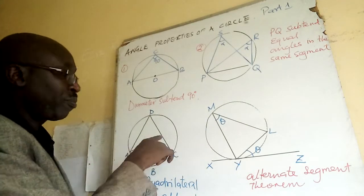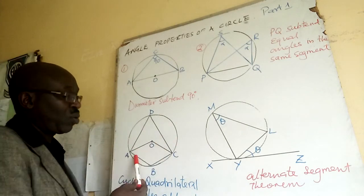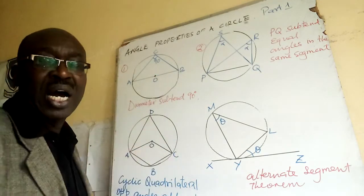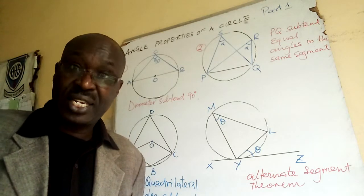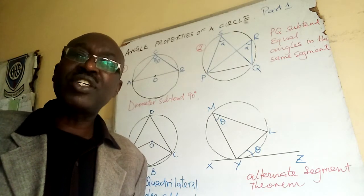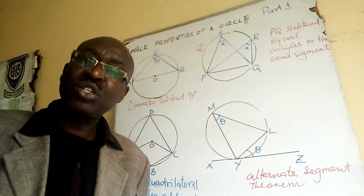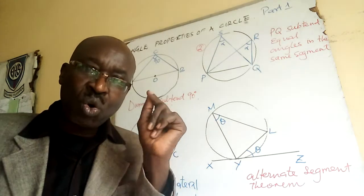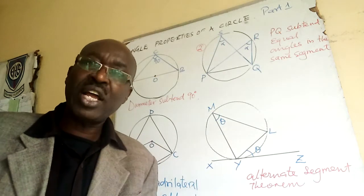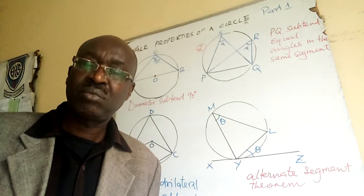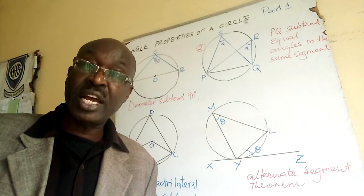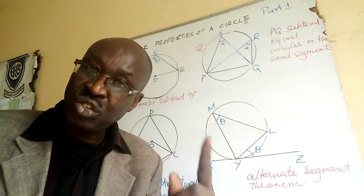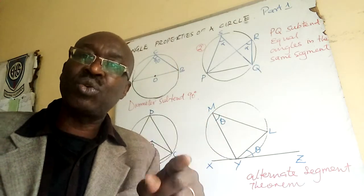Do not assume a line is a diameter unless you have been told so, or unless you can see it is a straight line passing through a point designated as the center. Since O is the center of the circle, AB becomes a diameter. Any straight line passing through the center of a circle is a diameter — do not assume it is a diameter unless you are told in the question.